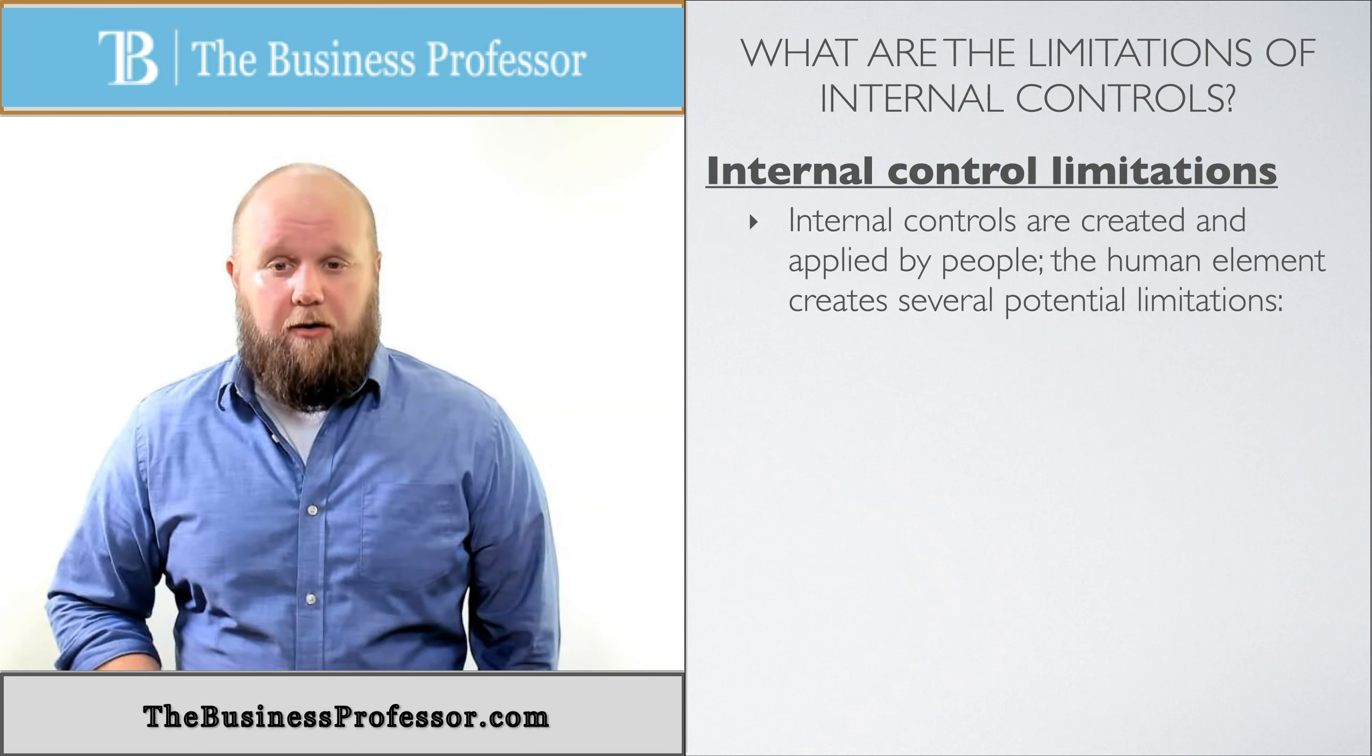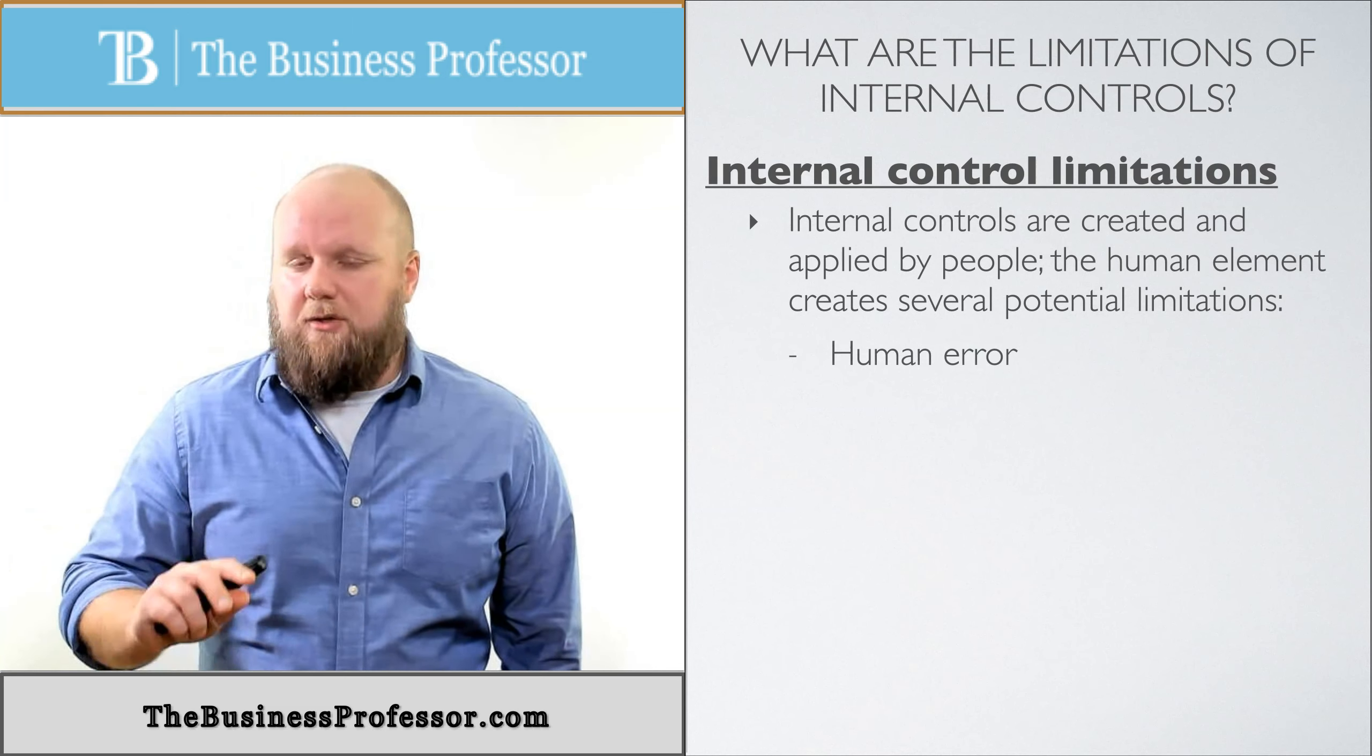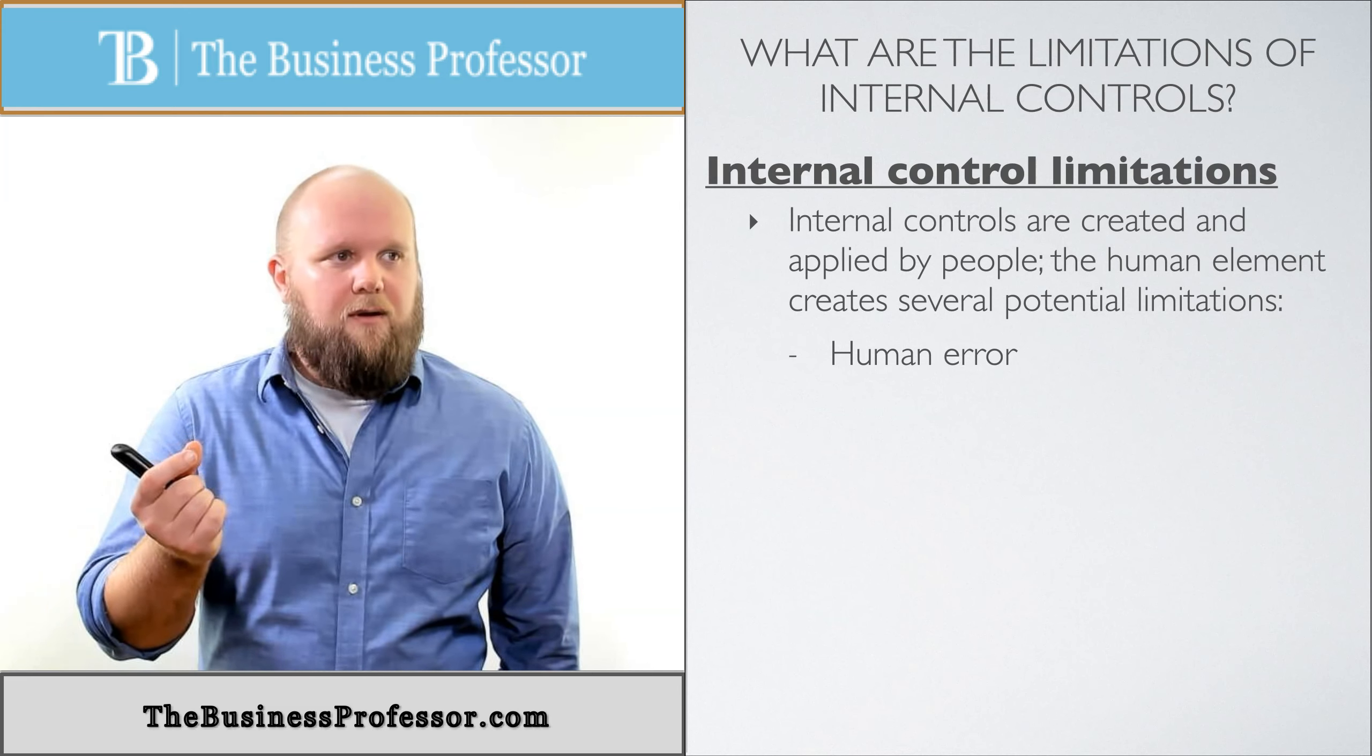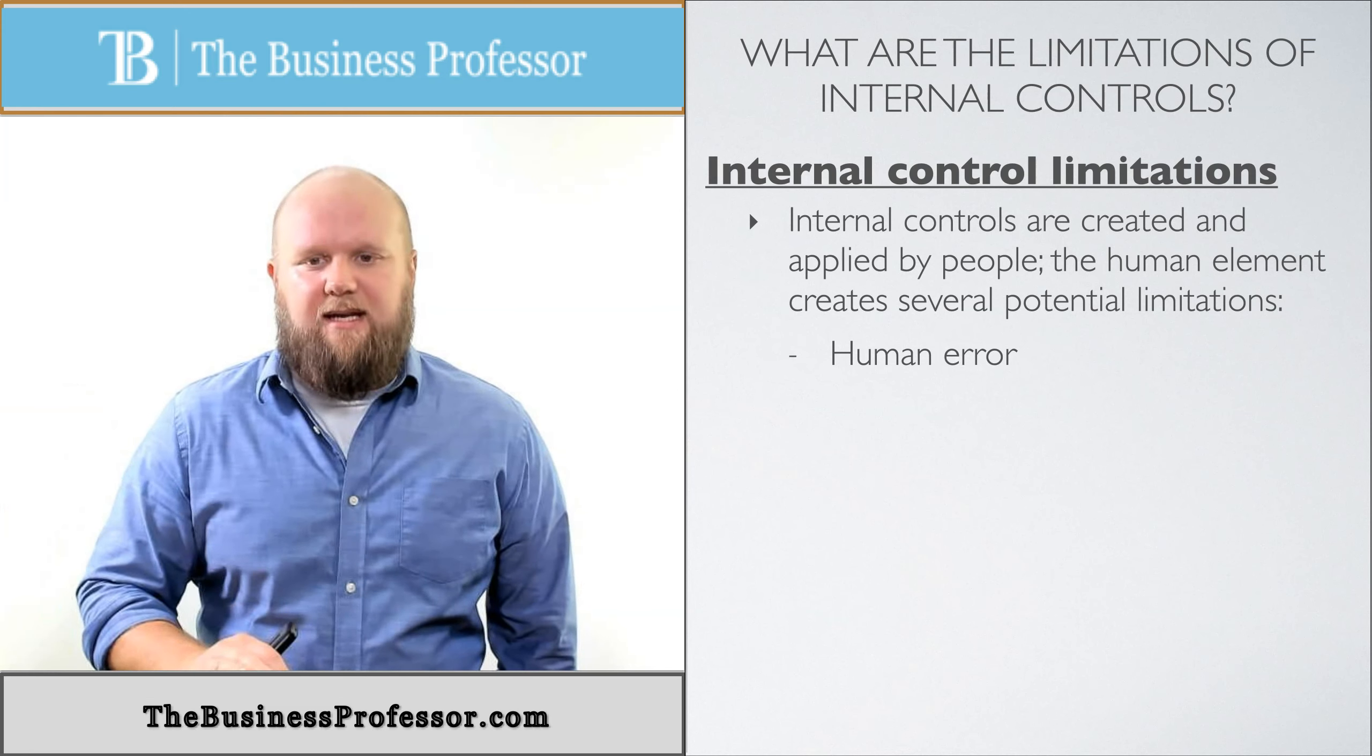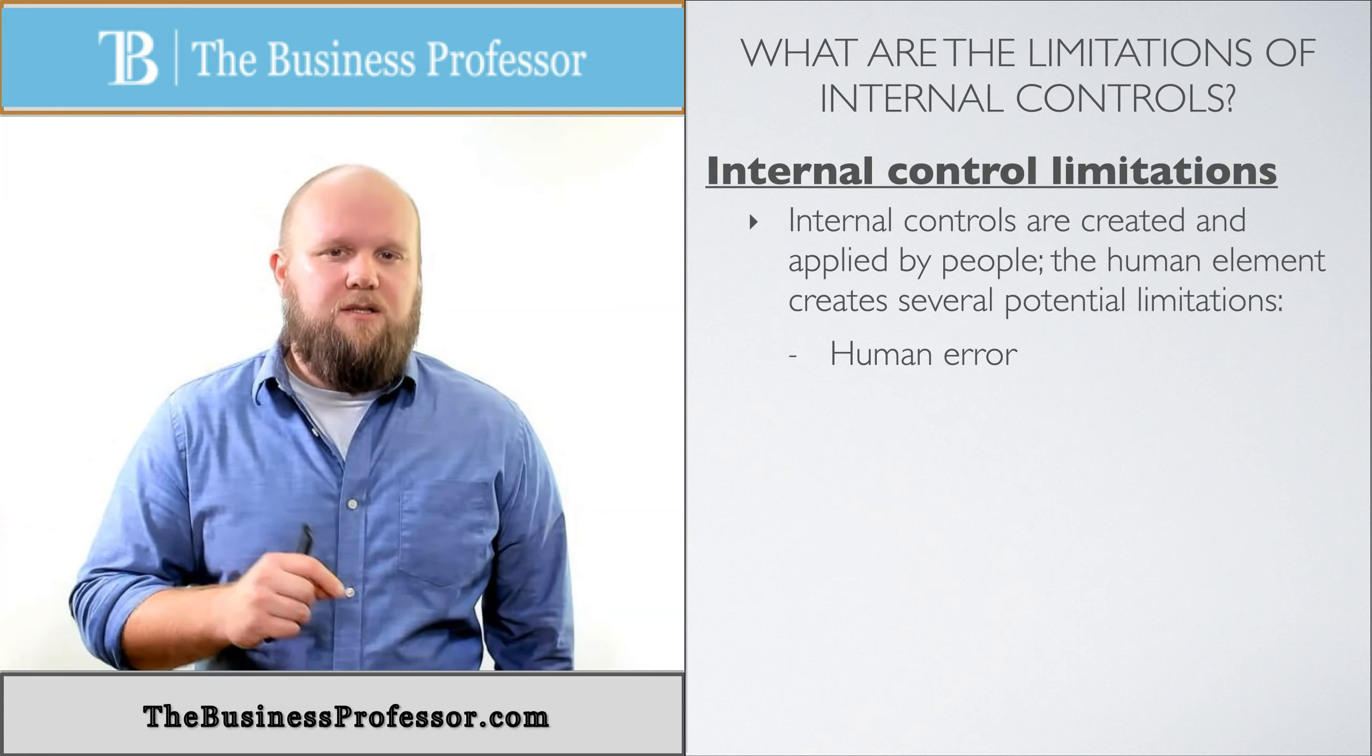You have what's called human error, and human error is simply a mistake. It was an accident - you transposed two numbers, maybe you're tired and you made a misjudgment or something like that, but it's just a simple mistake. Does that mean there are no repercussions? Of course there are, but it's probably not as severe as the next one, which is human fraud.